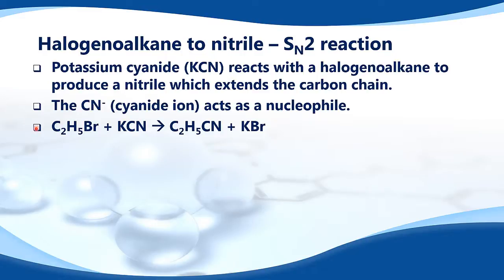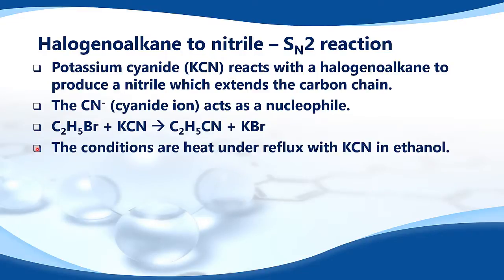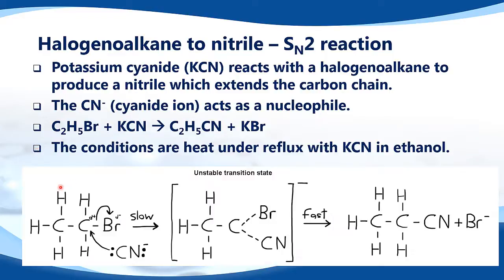Here's the equation for the reaction. The conditions are heat under reflux with KCN in ethanol. Here's the mechanism for the reaction, the SN2 mechanism. We have a primary halogeno alkane. The cyanide ion is acting as a nucleophile. We have the unstable transition state, and we end up with a 3-carbon nitrile, which is propanenitrile, and the bromine ion.